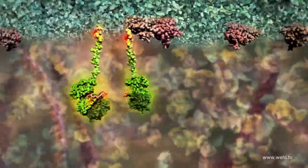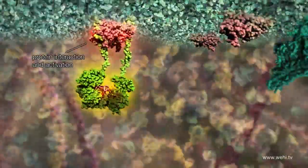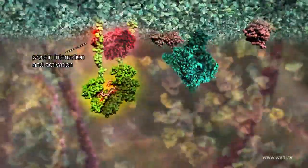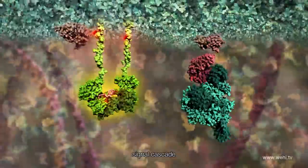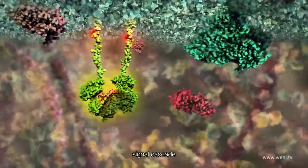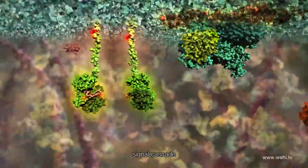Specialized proteins interact with the activated receptor just below the cell's surface. The receptor activates these proteins, and they in turn are able to activate multiple other proteins in a long signal cascade. This complex signaling process eventually tells the cell to take up glucose for use as an energy source.